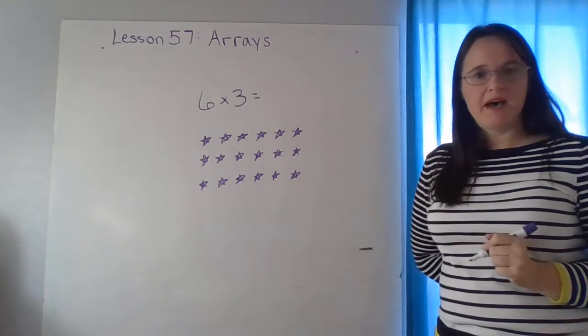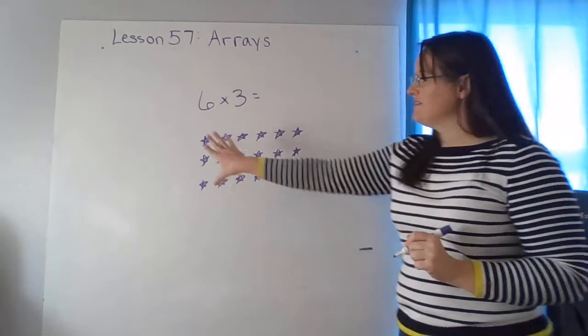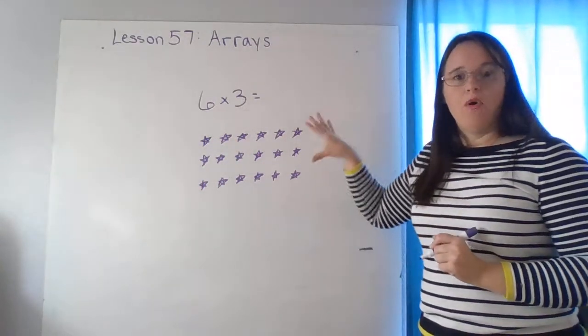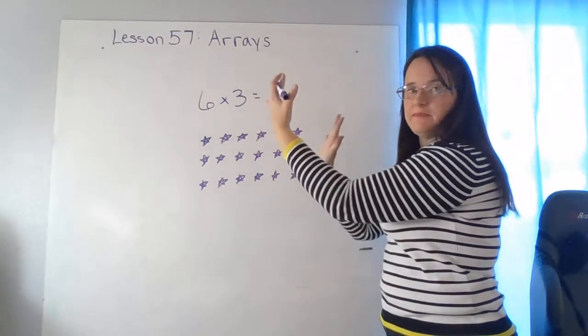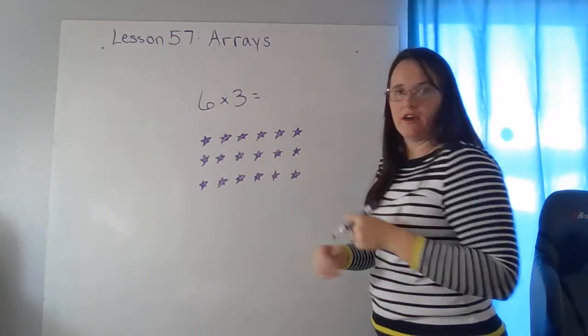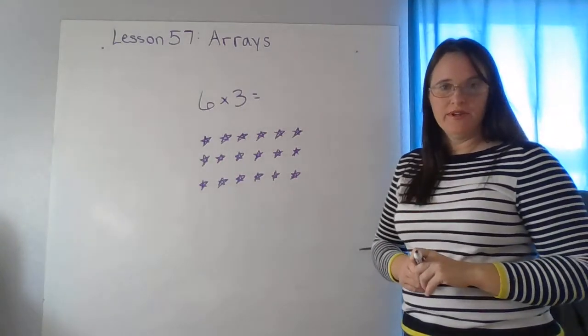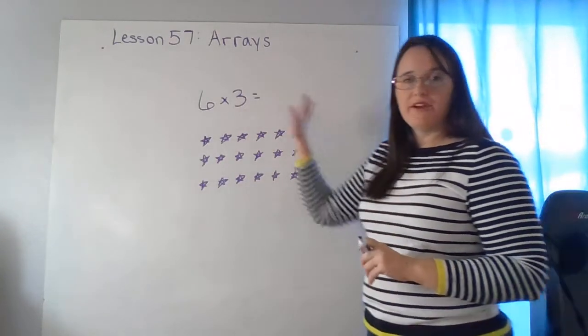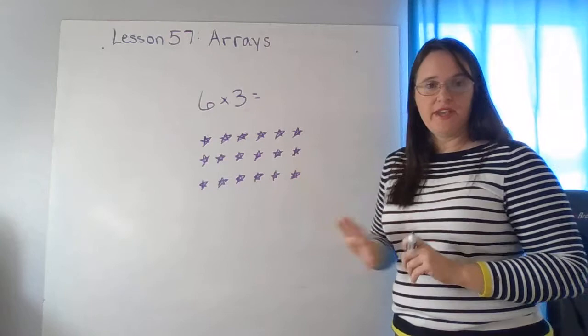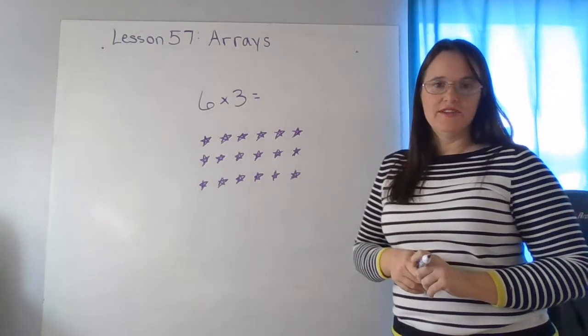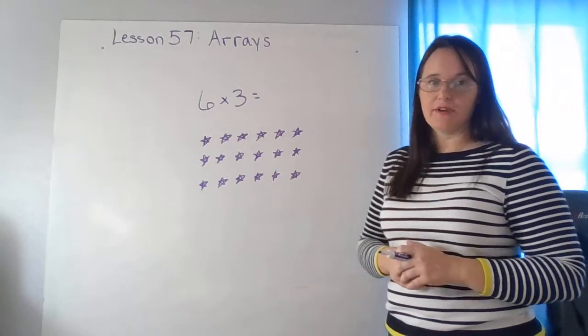Okay, here's mine. So you should have something that looks either exactly like this or maybe you flipped it so that you have three going across and six going up and down. That would be okay too. So the last part of this problem after showing our array is we have to figure out what is the answer. So we can either count by threes or count by sixes. Let's do threes.